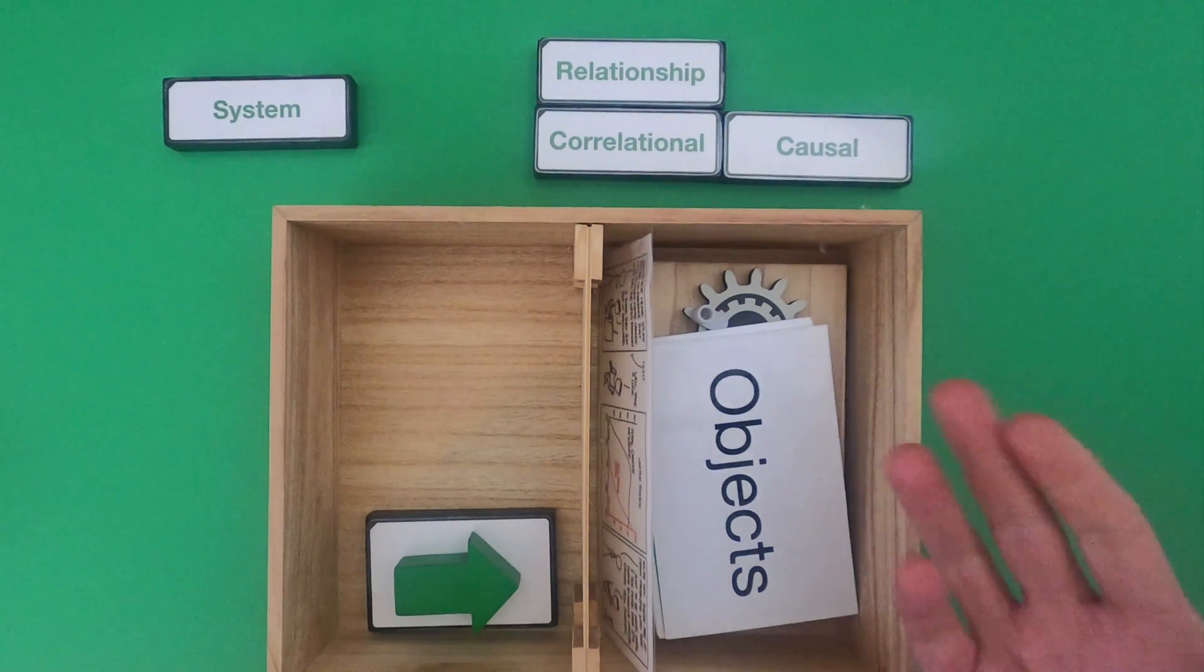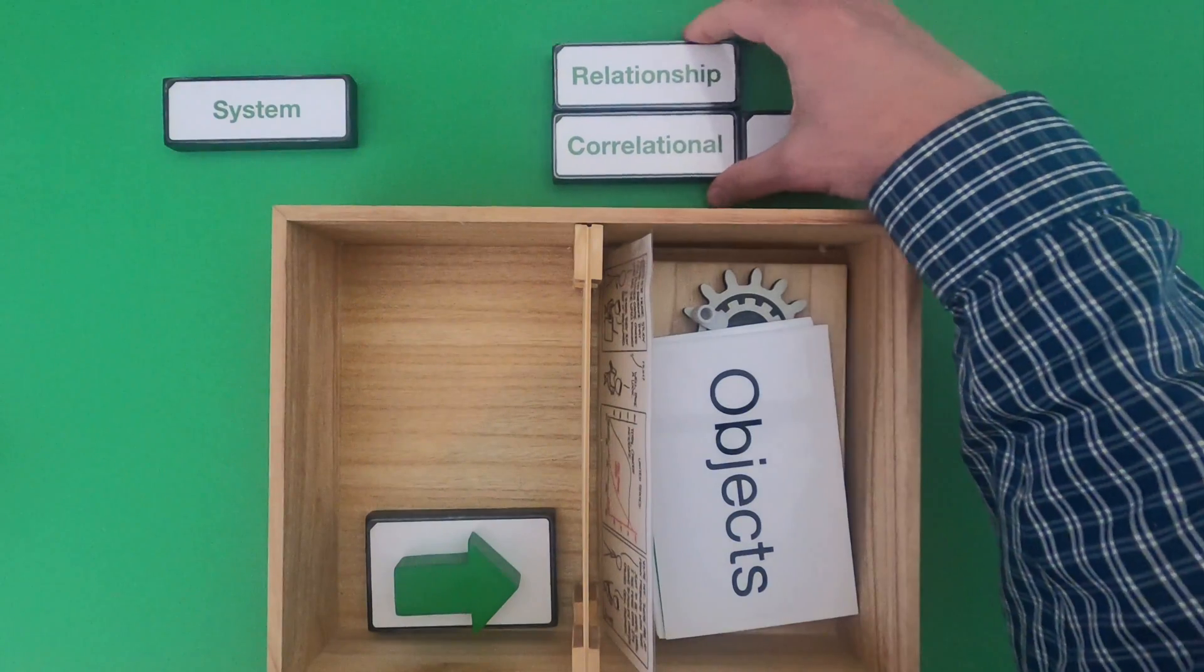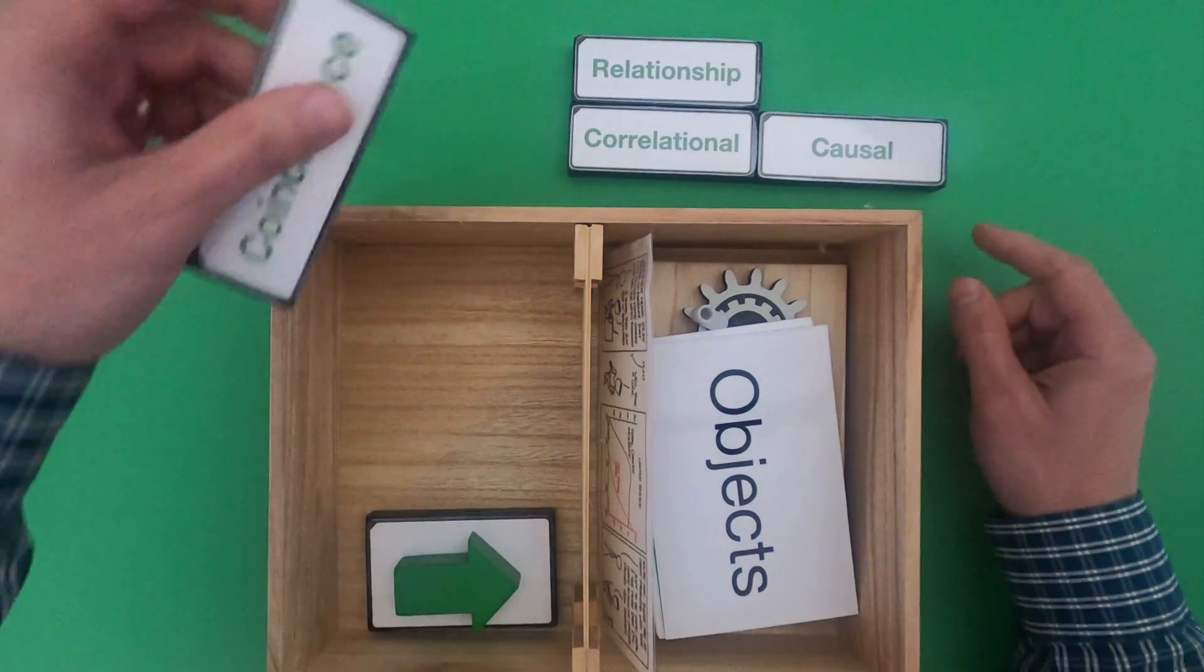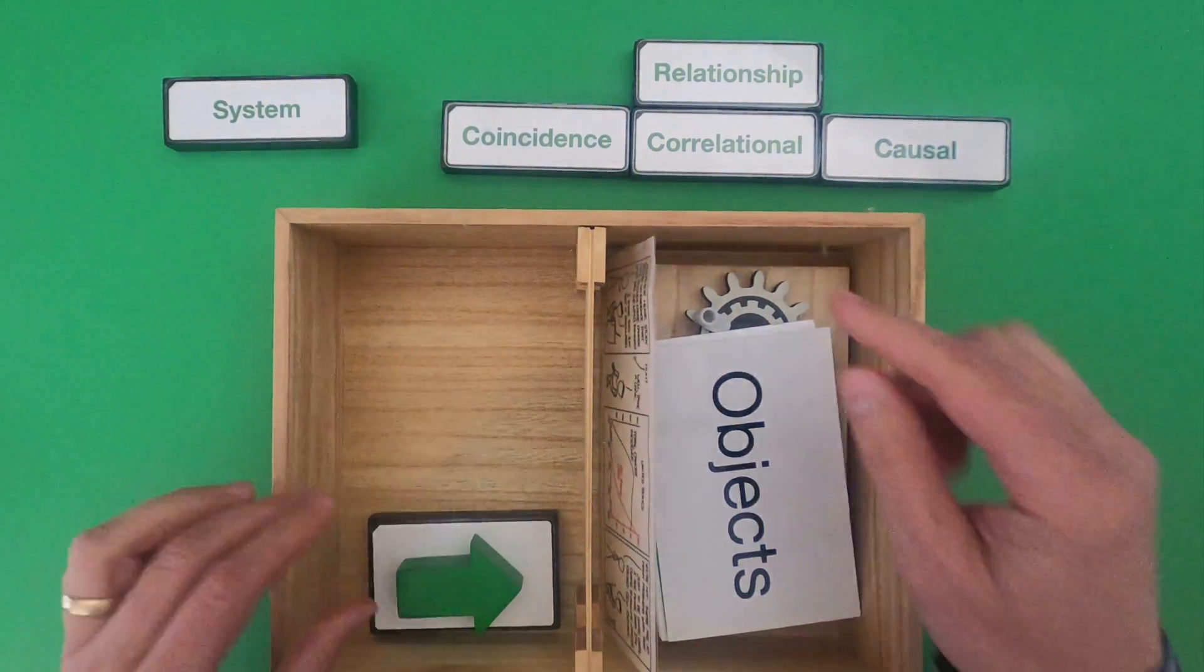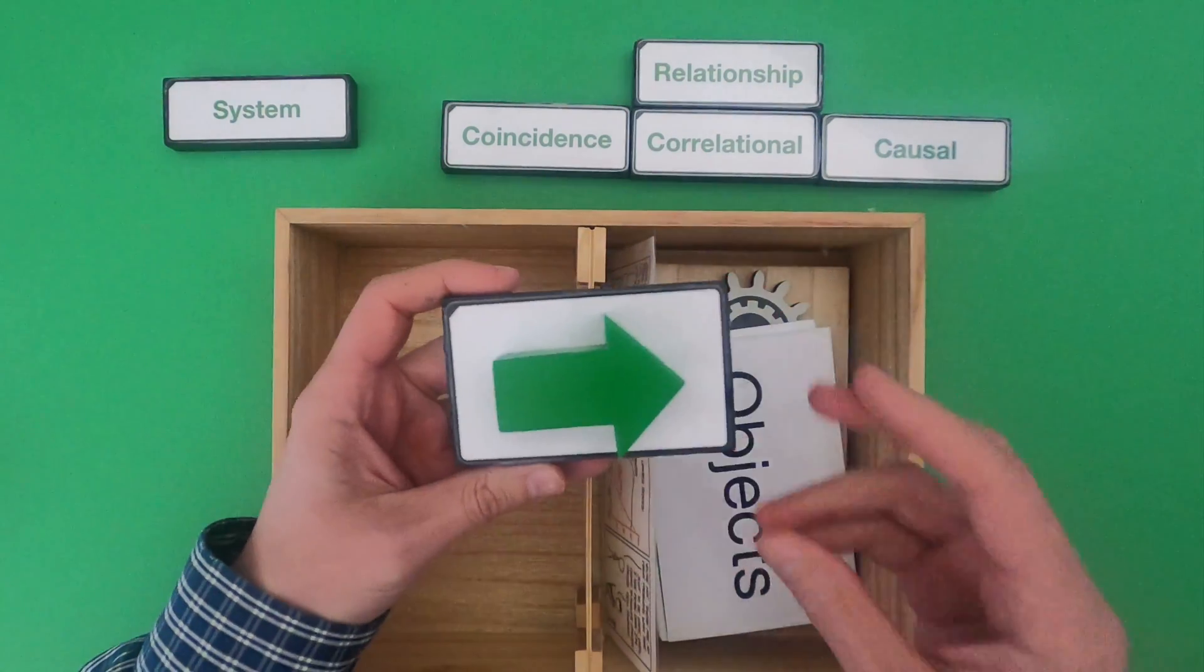But it's not like ice cream sales are causing drowning. So we're going to see are those just correlations caused by warmer weather? Is it causal relationships? Or a lot of the time we'll find that relationships are going to be just coincidence, two things that just happen at the same time.